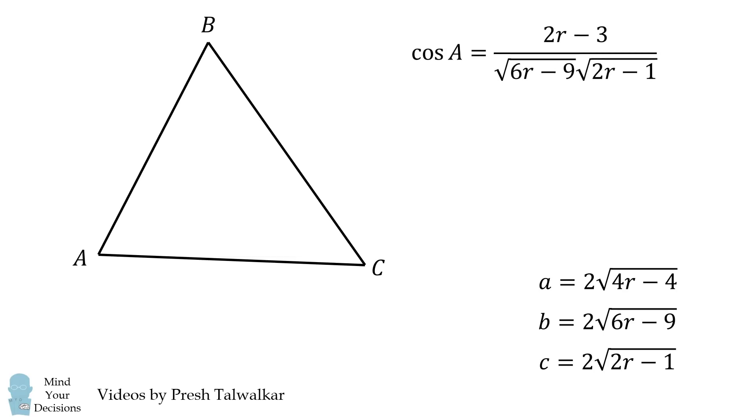From there, what are we going to do? Well, recall that sine squared of A is equal to 1 minus cosine squared of A. We can thus solve for the sine of A. After we do quite a bit of algebra and some simplification, we get that sine of A is the following.